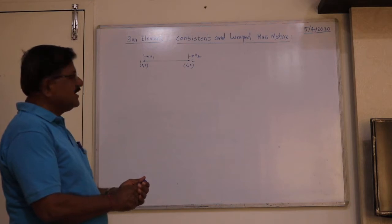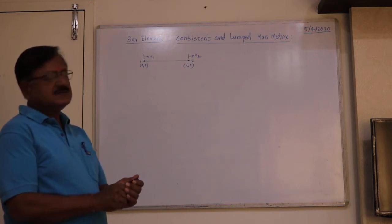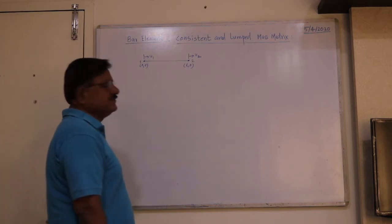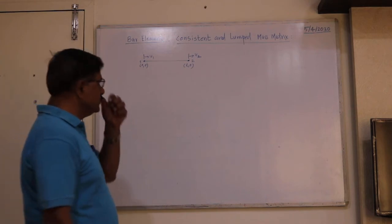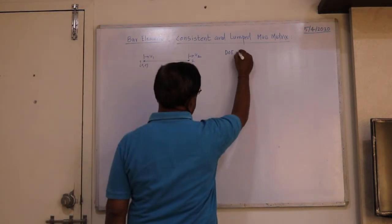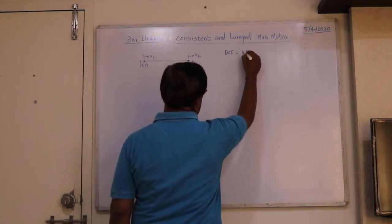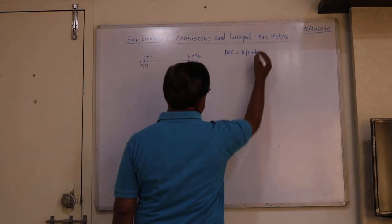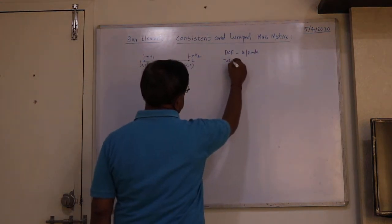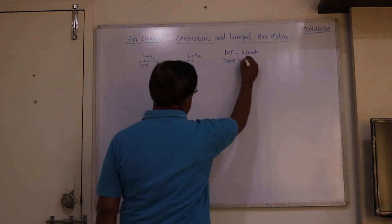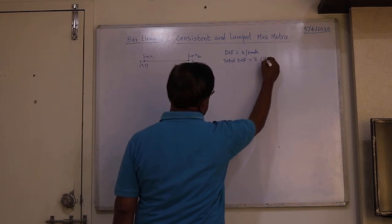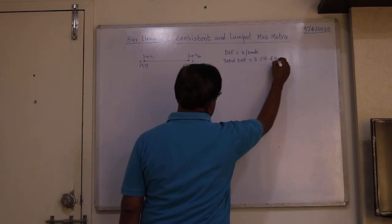Let's consider first the bar element — a two-noded bar element with degree of freedom u per node. The degree of freedom is u per node, so the total degrees of freedom is 2, that is u1 and u2.